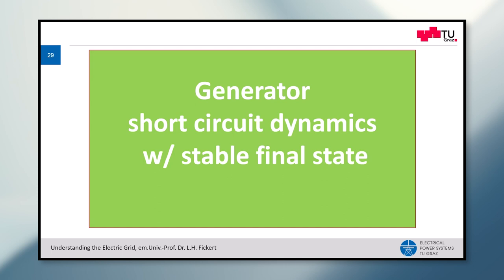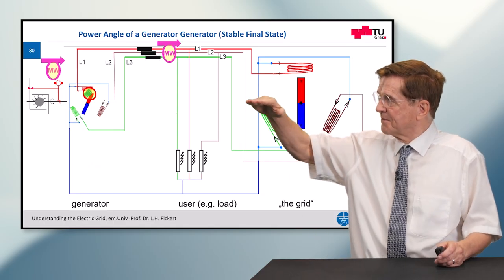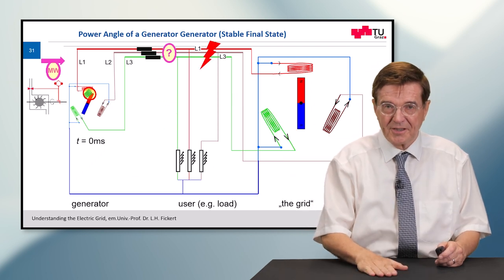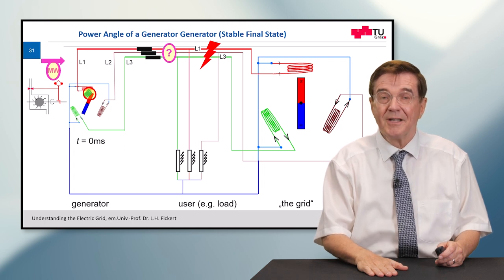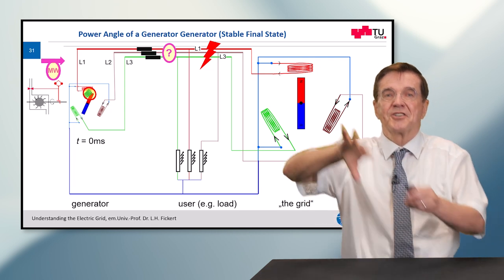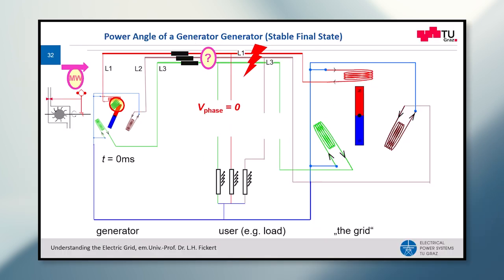Now we go into generator short circuit dynamics which in the first case I showed to you ends in a stable final state, so everything will go well. Again we start, the system is running smoothly, constantly until a short circuit happens. In a short circuit the voltage is down, not only at the fault point but nearly everywhere in the system, including the transition point between our power station and the big grid. So if the voltage is zero, the power export across this connection point will be zero.